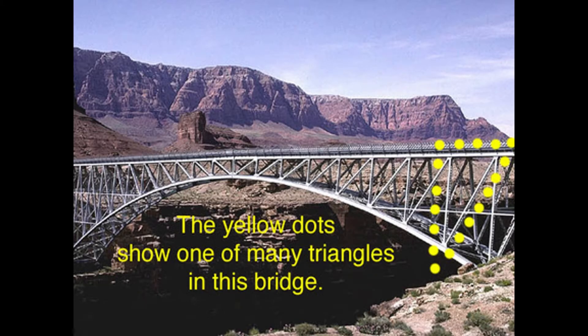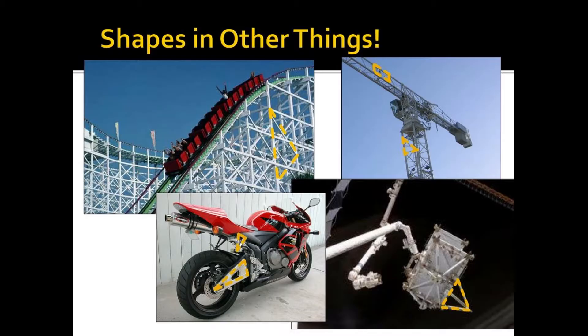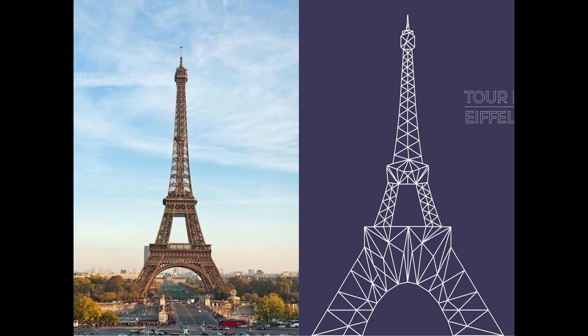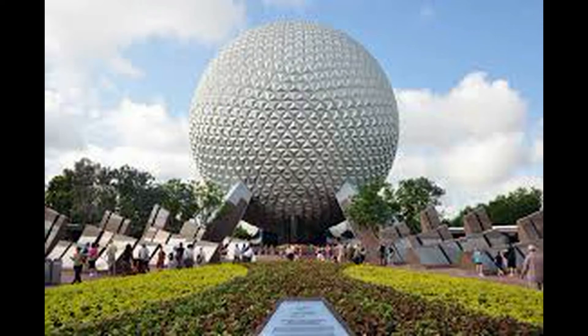We can see the triangle in all structures around the world, whether it's bridges, roller coasters, cranes, motorbikes, and even famous architectural designs such as the Eiffel Tower and Epcot from Disney.